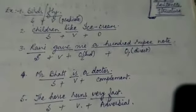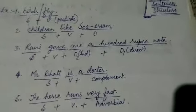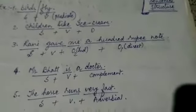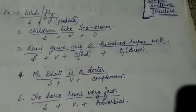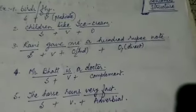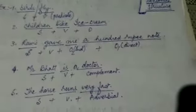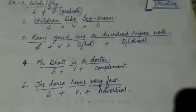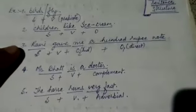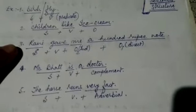And then the direct object will be the non-living thing. The other way around we can say is the indirect object is always the beneficiary. Here who gets the money? It's me who gets the money, so I am the indirect object.